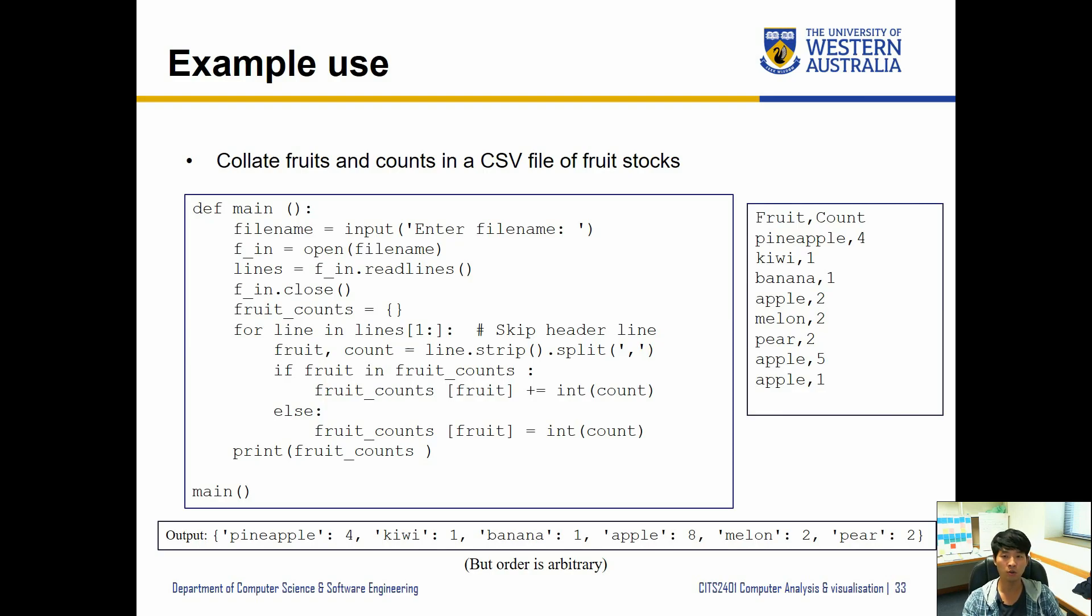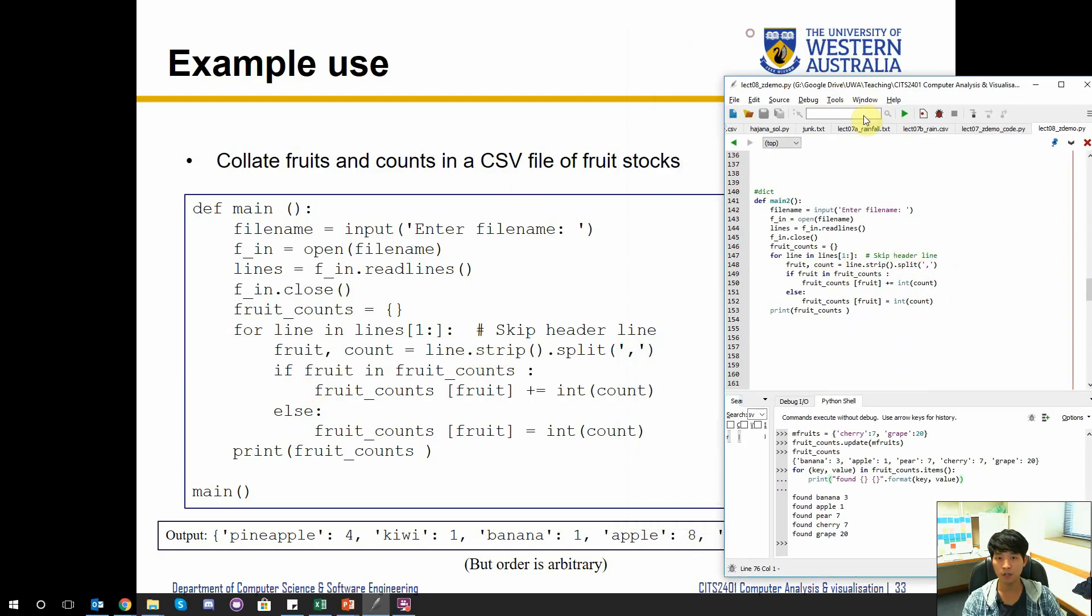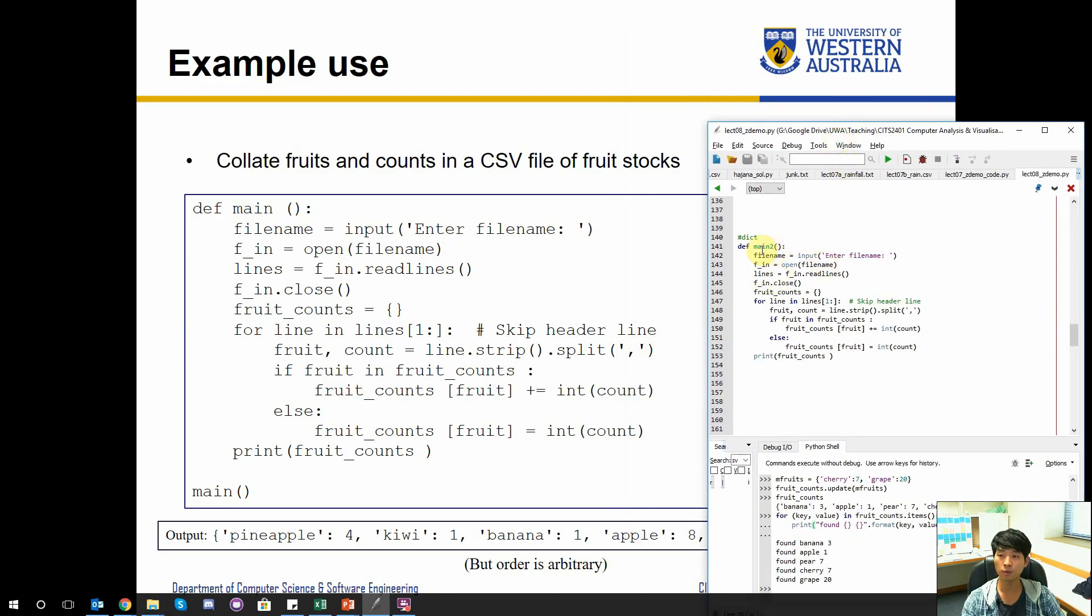So this is the code over here. I just renamed it to main 2. And what we're going to do is some file handling here, read the file, open it, and we are going to expect a fruit and count separated by a comma.